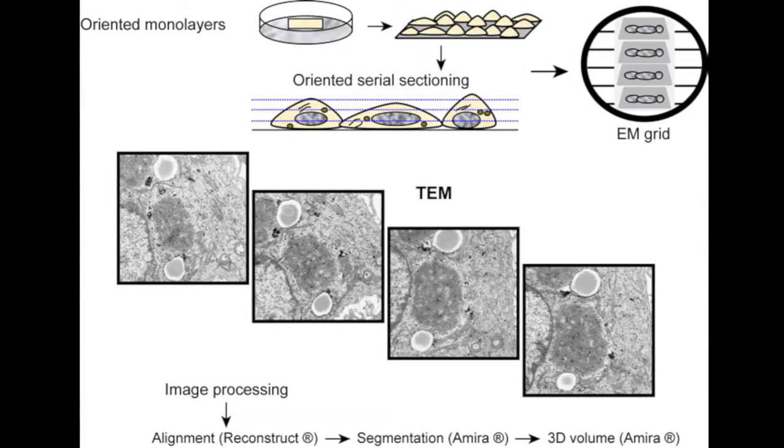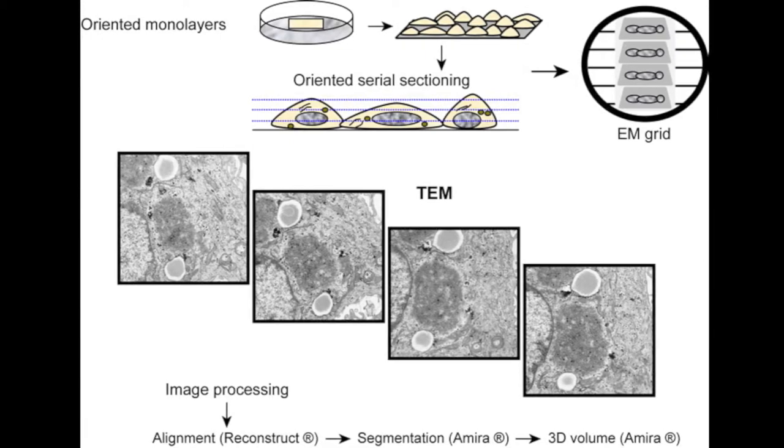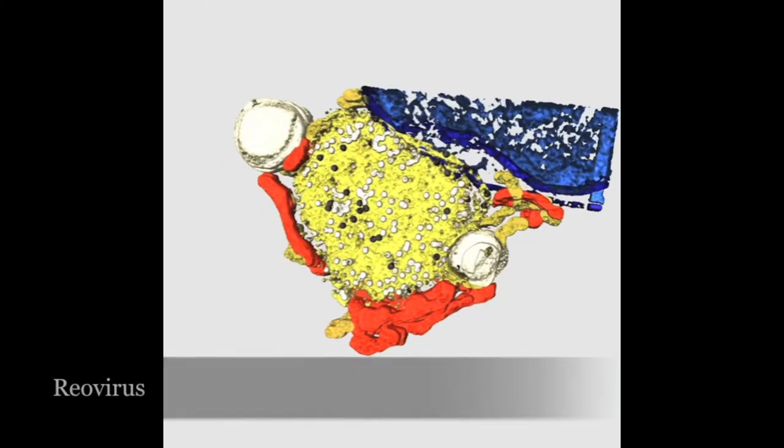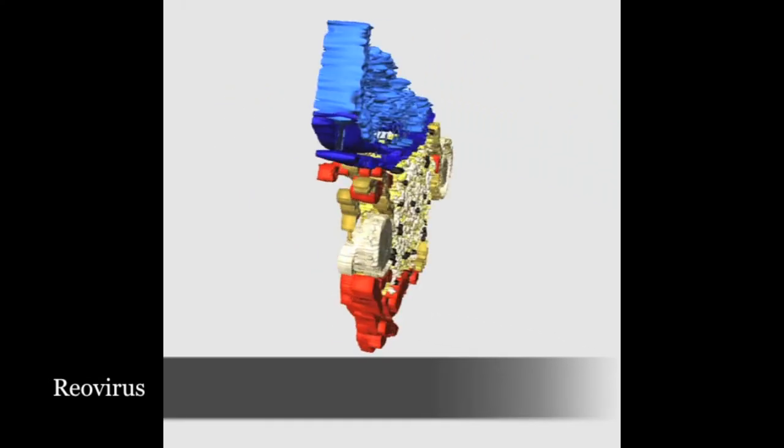Oriented serial sections are collected in an ultra-microtome and visualized by transmission electron microscopy. Images are aligned and processed for 3D reconstruction.